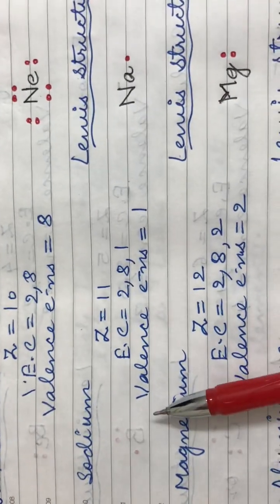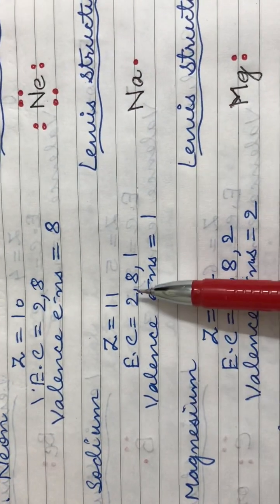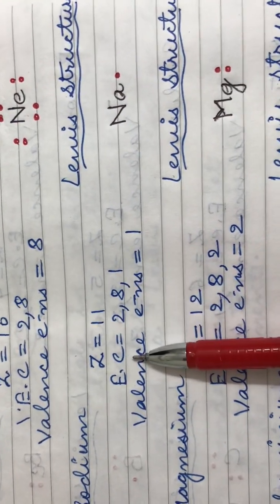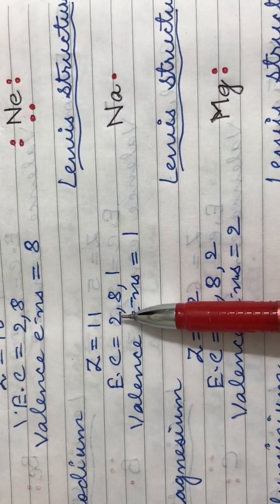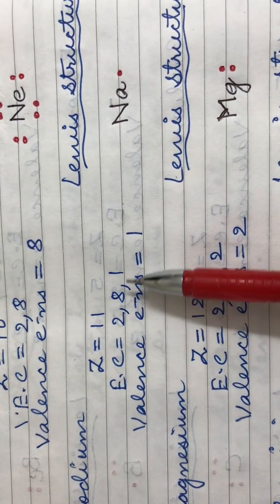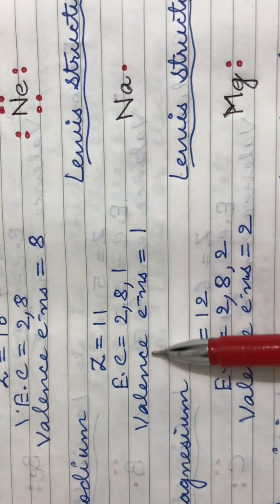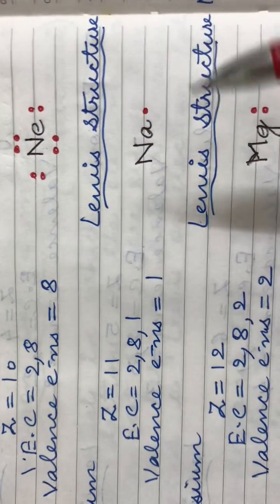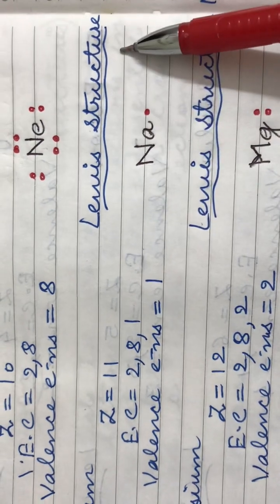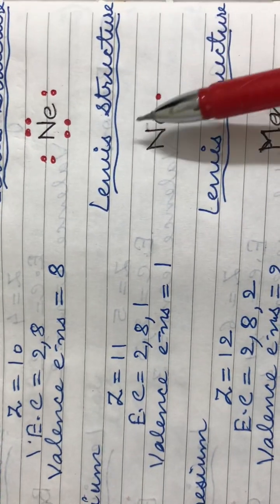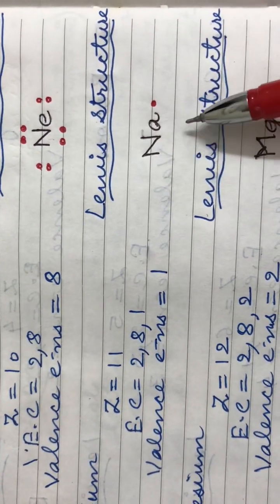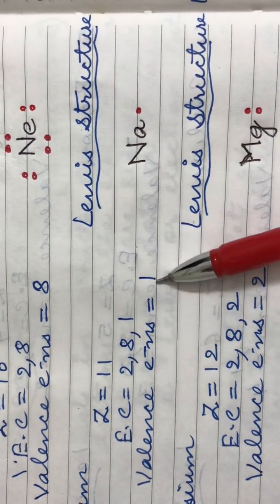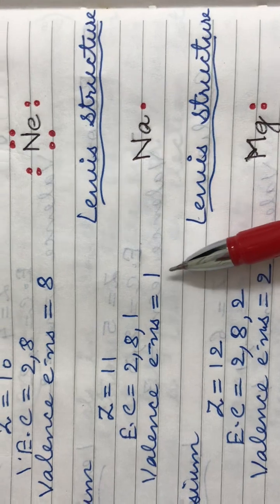Coming to the next element, sodium. It has an atomic number of eleven. Its electronic configuration is 2,8,1 and it has one valence electron. Therefore, the Lewis structure for sodium is its symbol Na with one dot for its one valence electron.